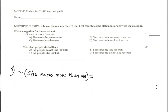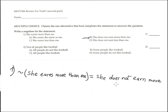This is the second part of the review on mathematical logic. The first question is to write the negation of the statement. The negation symbol is used here, and the answer is B: she does not earn more than me.